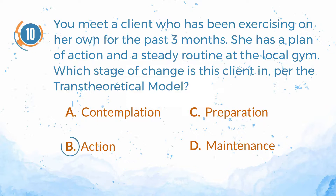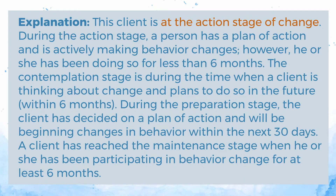The answer is B — action. This client is at the action stage of change. During the action stage, a person has a plan of action and is actively making behavior changes, but has been doing so for less than six months. The contemplation stage is when a client is thinking about change and plans to do so within six months. During the preparation stage, the client has decided on a plan of action and will begin changes within the next 30 days. A client reaches the maintenance stage when he or she has been participating in behavior change for at least six months.